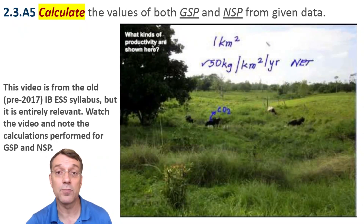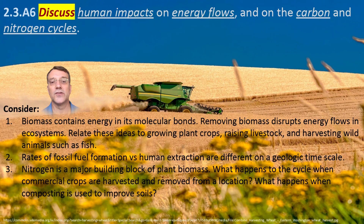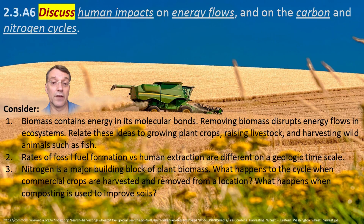If you're asked to discuss human impacts on energy and matter flows on your exam, consider how agricultural practices, fossil fuel use, and deforestation disrupt natural cycles. Harvesting biomass removes energy stored in molecular bonds. Fossil fuel extraction occurs much faster than those fuels are formed. Nitrogen-rich crop removal depletes soil nutrients unless replaced through natural soil amendments or commercial synthetic fertilizers.